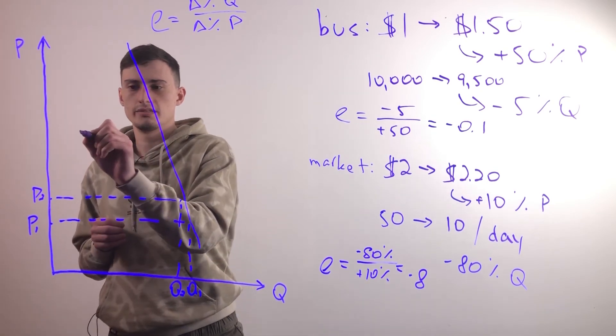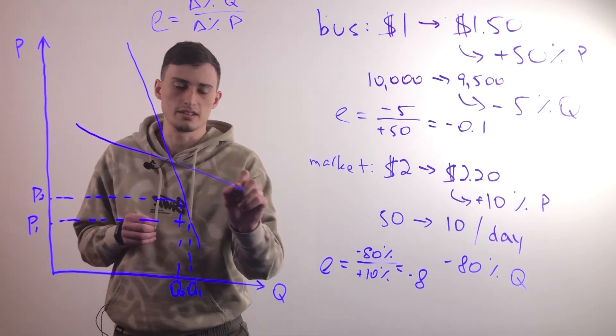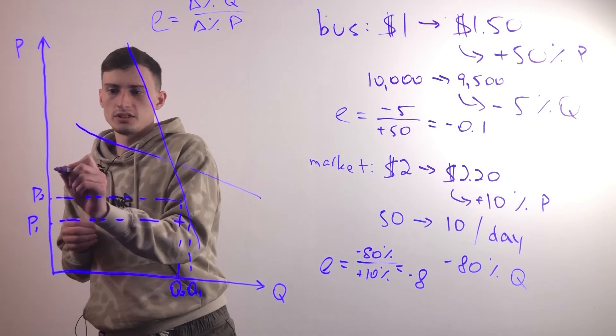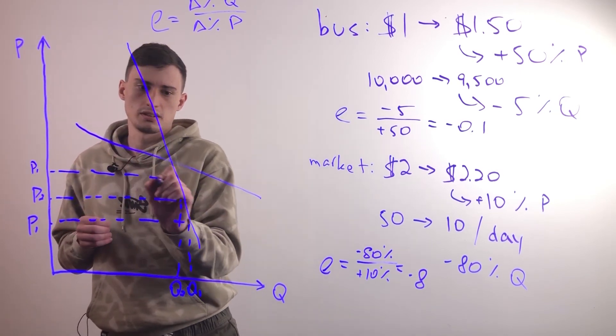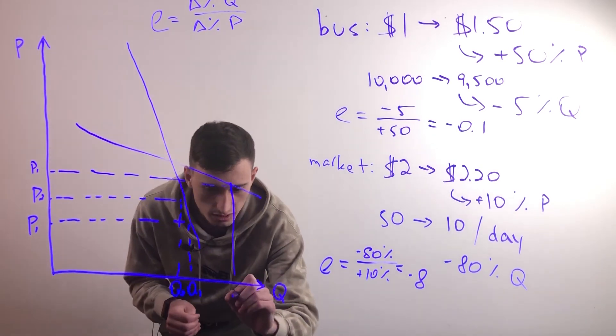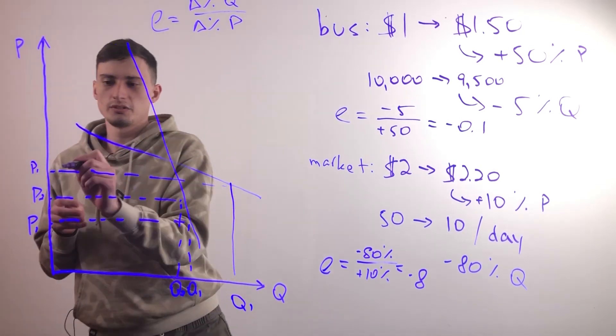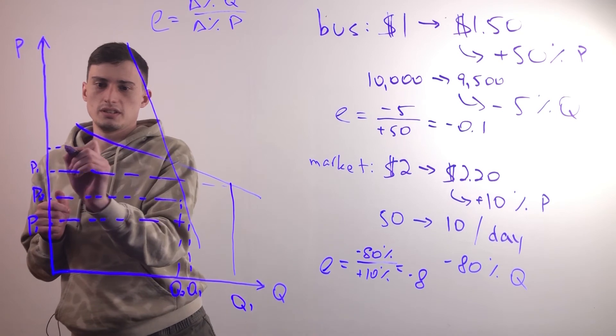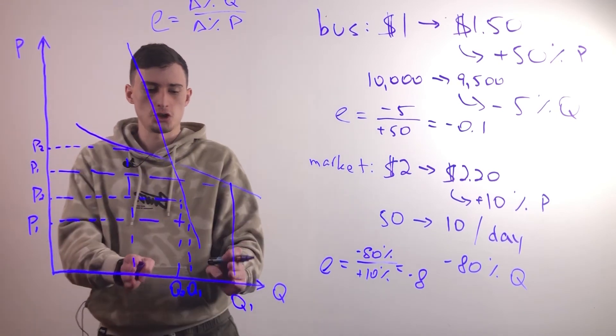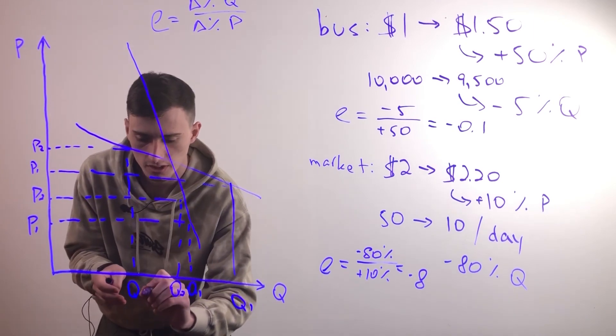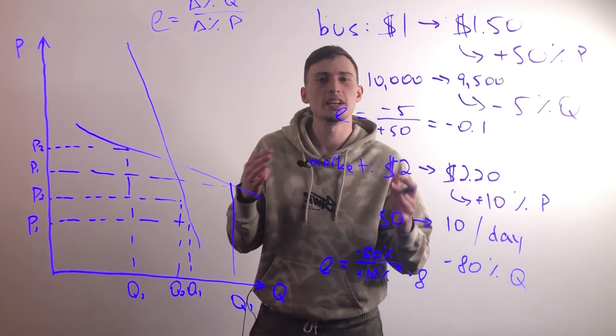What does that mean on a graph when we look at it? So if this is the demand curve like this, first he charged two dollars right over here. This is his initial quantity. But as soon as he increased the price by just a little bit, all of a sudden there's a huge difference in the quantity that he sold.